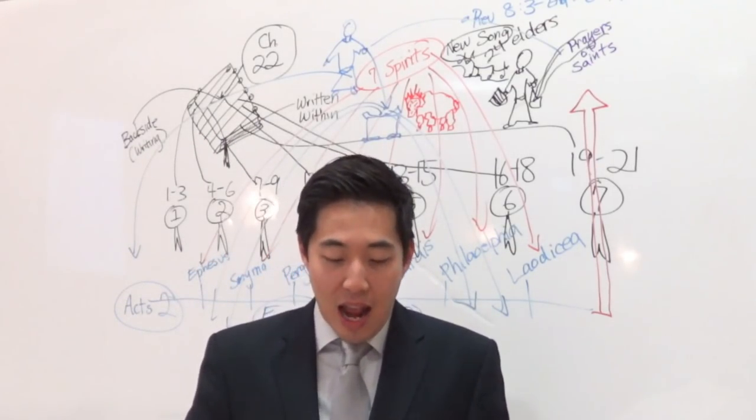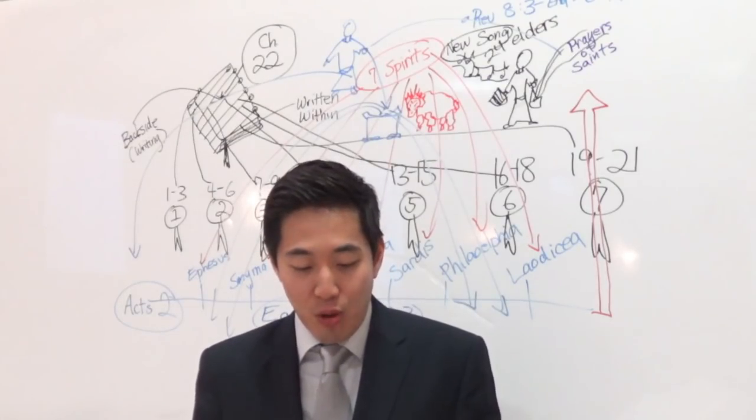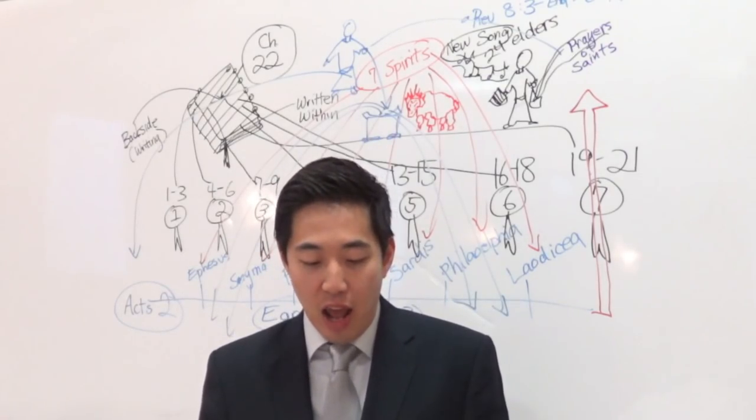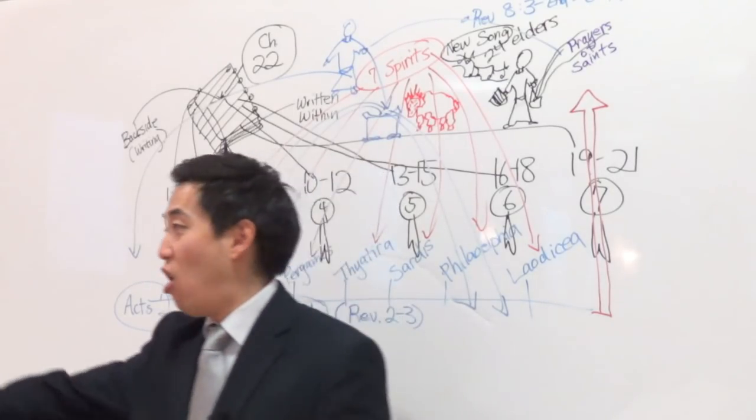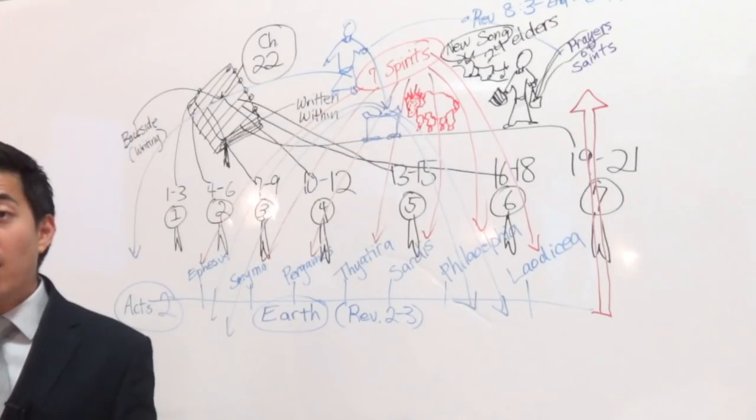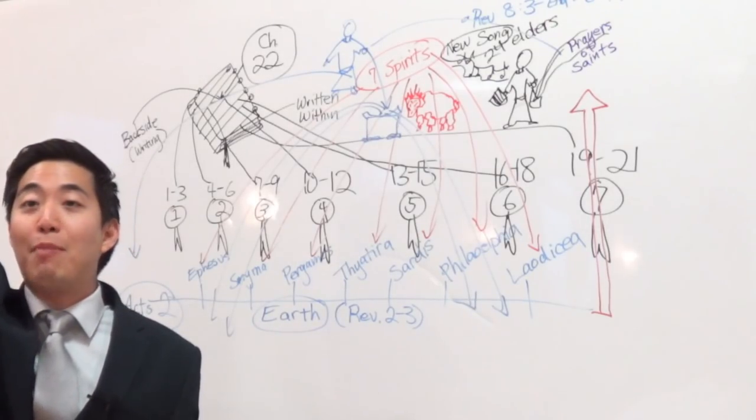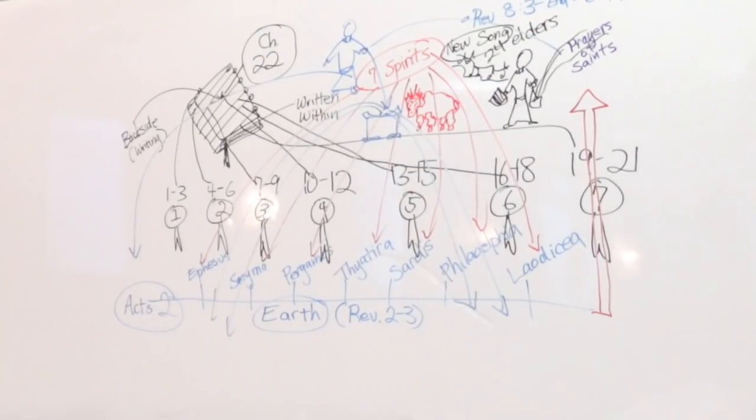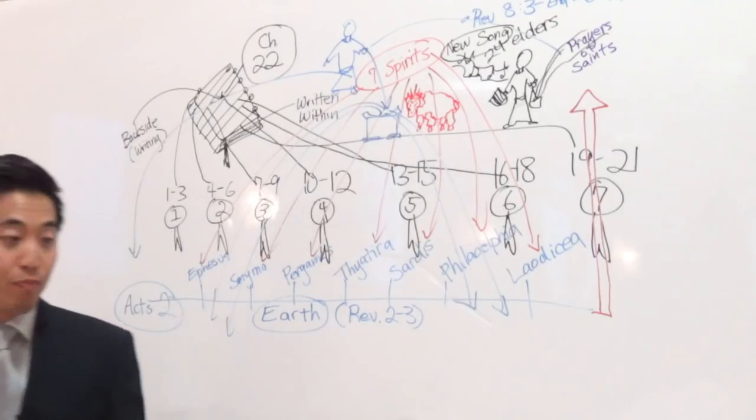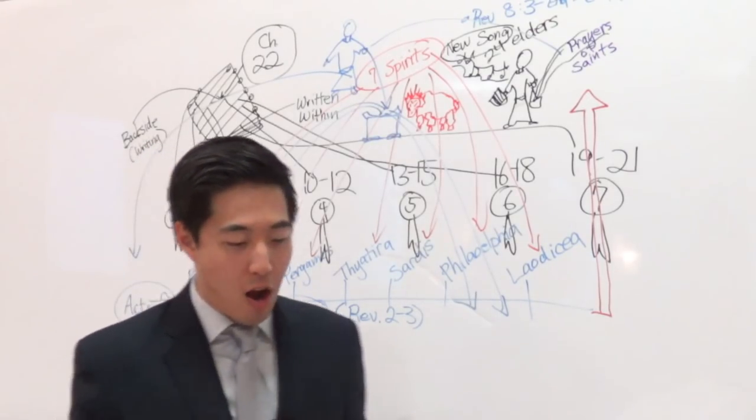And the 4 and 20 elders, that's us, right? Fell down and worshipped Him that liveth forever and ever. No kidding, right? When we see all creation giving up, rejoicing to the Lord, and the four cherubim says, Amen. You and I can't help but just fall flat on our faith and go like this to God out of amazement and wonder of the Lamb.